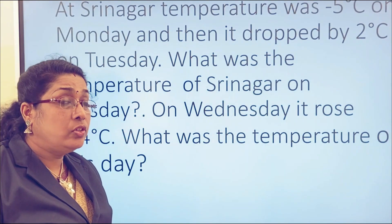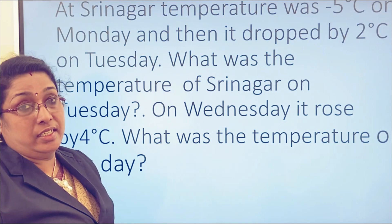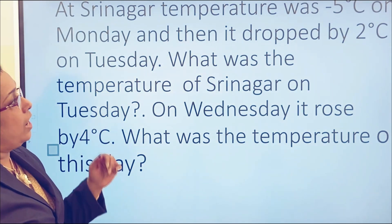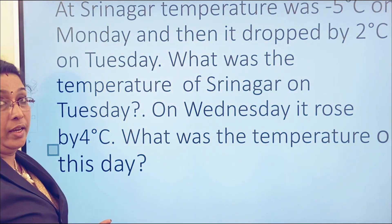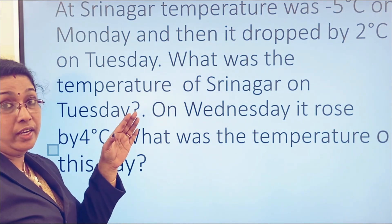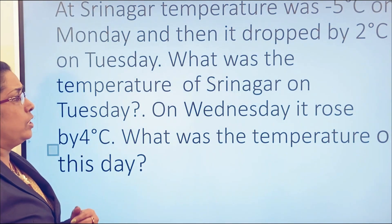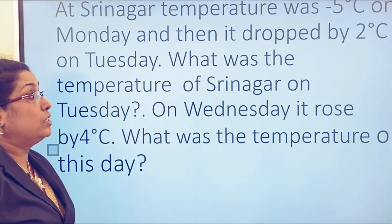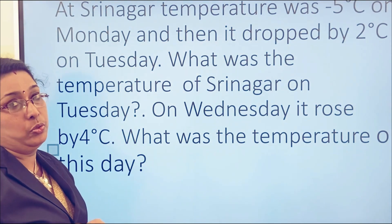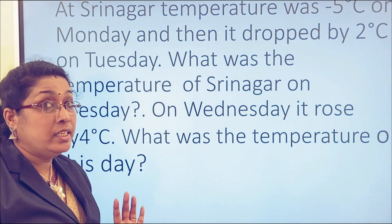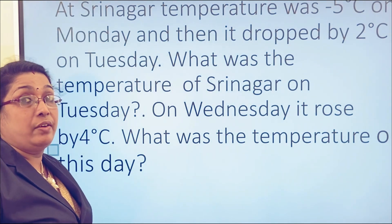Here is the next question. At Srinagar, the temperature was negative 5 degrees Celsius on Monday, and then it dropped by 2 degrees Celsius on Tuesday. Monday it was negative 5. Dropped means it came down by 2 degrees Celsius. What was the temperature of Srinagar on Tuesday? Monday it was negative 5, so it dropped: negative 5 minus 2 gives negative 7. The temperature on Tuesday is negative 7 degrees Celsius.